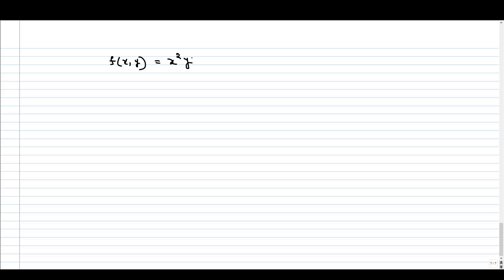If f(x,y) equals x square y square minus x square minus y square, what we have to do? We have to find fx and fy first.